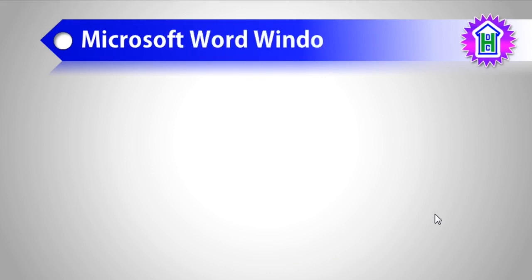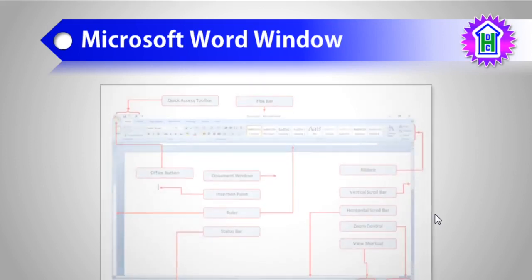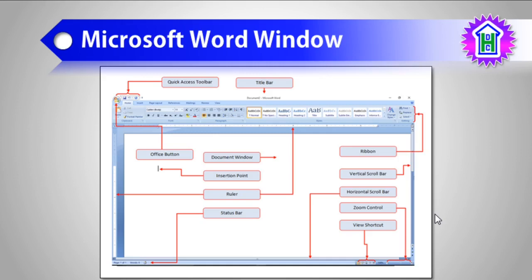The next topic is all about the Microsoft Word window. After we run Microsoft Word from the Run dialog box or from the menu, we will get to see the interface of Microsoft Word 2007. Now let us identify the different components of the Microsoft Word window.